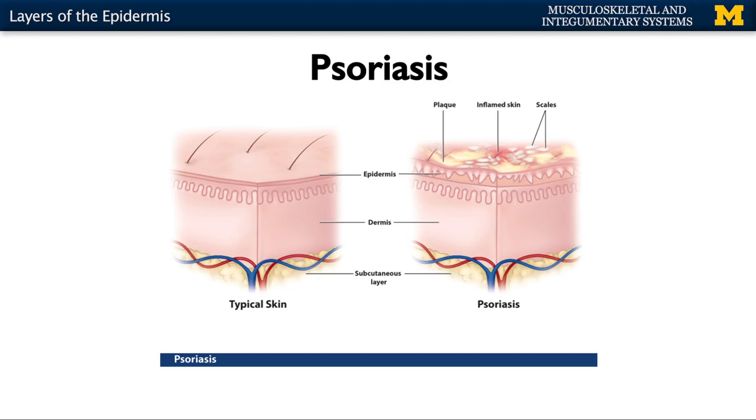In psoriasis, the accelerated cell production results in the creation of what's referred to as plaque — appearing almost white and scaly — and there can also be redness or inflammation associated with those skin cells. These cells don't go through the proper developmental process; it moves too fast, and you don't have the typical corneocyte you'd have in the stratum corneum. Dandruff is actually very similar to this but located solely within the scalp.